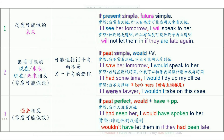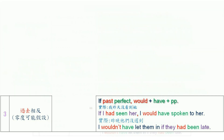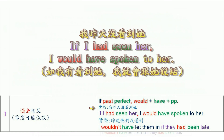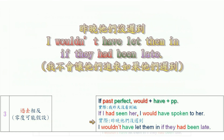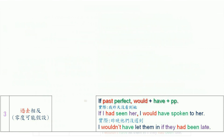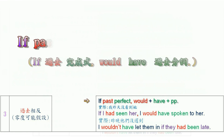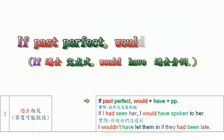Moving on to the third conditional. The third conditional is used to talk about unreal situations in the past — there is a hypothesis with zero possibility. In the third conditional, we use the past perfect in the if clause, and the consequence clause is formulated with 'would have done'.